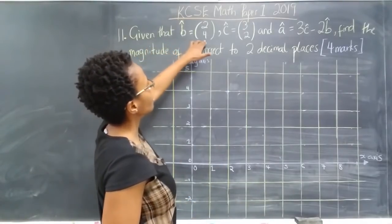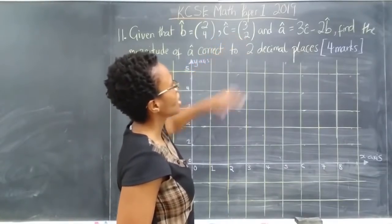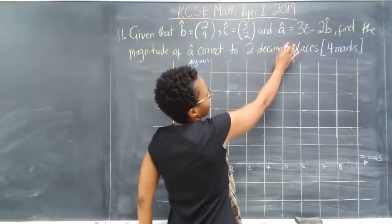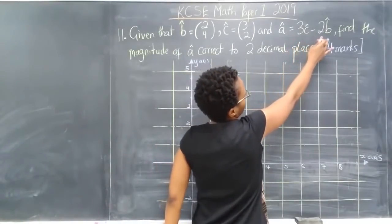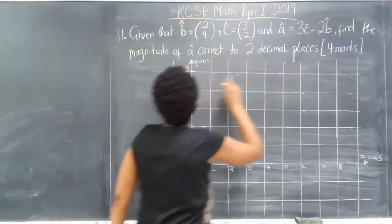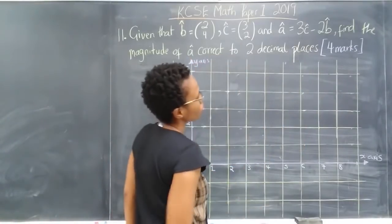So given that b has coordinates (2, 4), and c has coordinates (3, 2), and a is equal to 3 times the vector c minus 2 times the vector b, find the magnitude of the vector a correct to two decimal places.